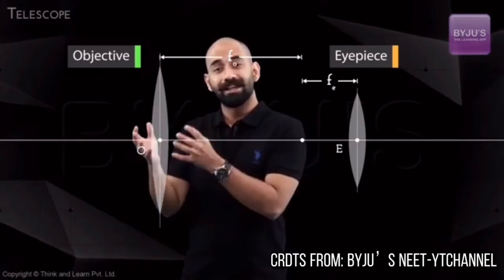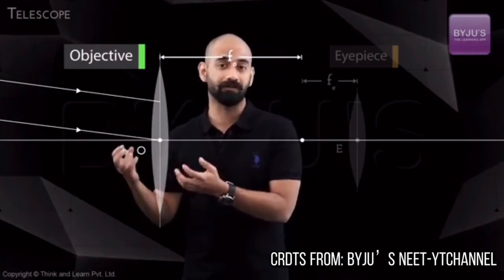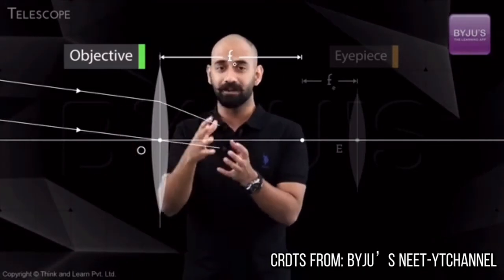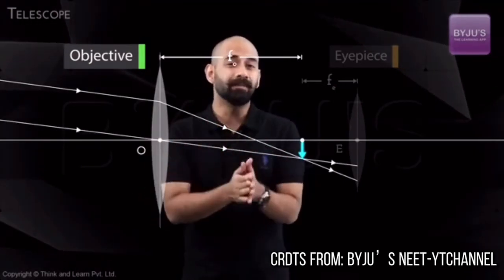What happens is, the objective receives parallel rays because the object is extremely far off, so it's almost at infinity. These parallel rays are focused by the objective and it forms a real, inverted, and diminished image.